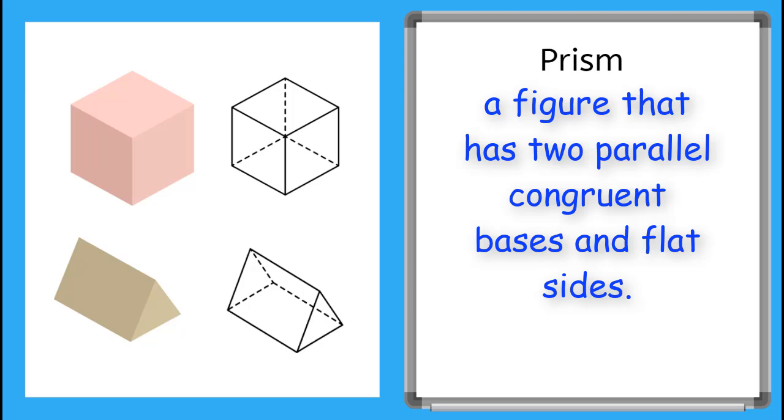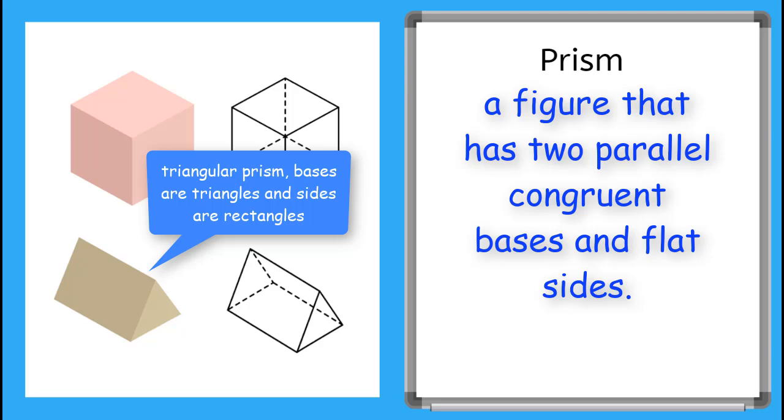we can also have triangular prisms like this one. See how both faces are parallel and congruent triangles? What shape do you see on the sides? Yes, those ones are rectangles.